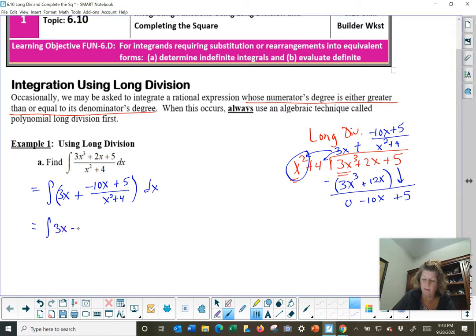What if I did this? 3x minus, I'm going to go plus, negative 10x over x squared plus 4, add with 5 over that common denominator, x squared plus 4. Does that mathematically look legal? And the answer is yes. We can take that numerator and split it up by addition there with the same denominator. Now it's like I've got three individual integral problems.